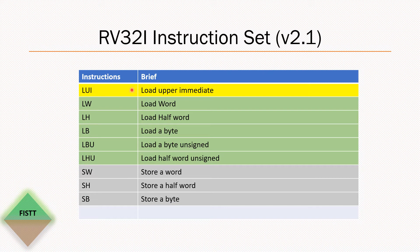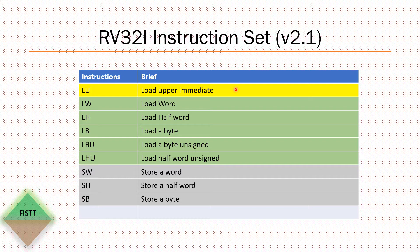I have grouped these instructions into three groups as you can see color-coded differently. The last three instructions in gray are the store instructions — these store a value from a register into memory. The five instructions in the middle are the load instructions, which load a value from memory into a register. The one in yellow, called Load Upper Immediate, does not load any value from memory but loads an immediate value into the register, which we will see more about soon.